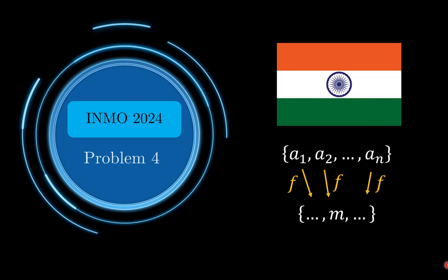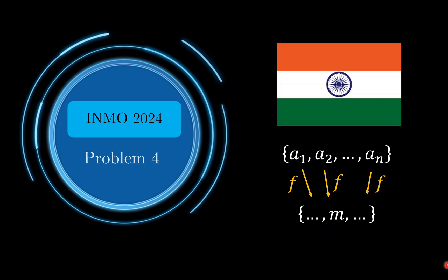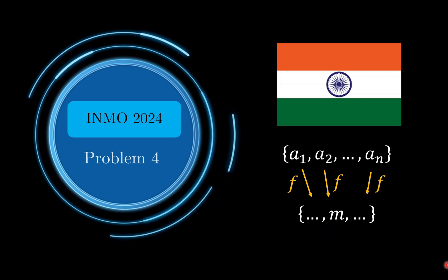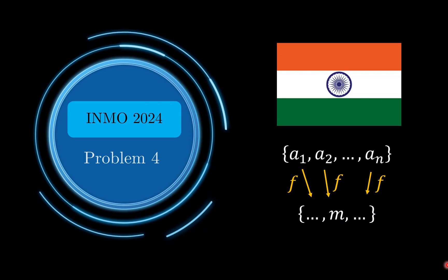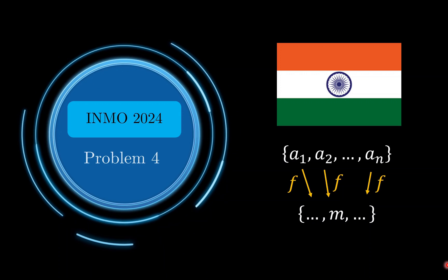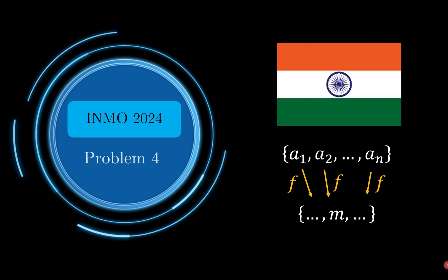Now for the INMO, the format of the contest is that contesters are given 4 and a half hours to work through 6 problems, so problem 4 isn't necessarily the easiest problem in the set. But let us now take a look at this problem.